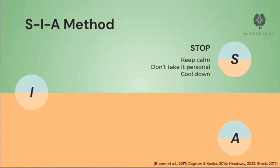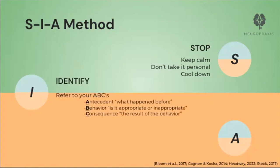Distract yourself with anything that will help you cool down like taking a short walk, taking deep breaths, stretching, or even watching a comedy. The I stands for Identify the triggers. This can be done by referring to your ABCs: A stands for antecedent — what happened before; B stands for behavior — is it appropriate or inappropriate; C stands for consequence — the result of the behavior. This is the best way to gather key information to prevent another occurrence. Assume there is an underlying reason behind the behavior — they may be having a hard time processing their needs into words, or the environment, physical symptoms, side effects, medications, or their current emotion can be leading to this behavior. Watch for obvious signs of pain such as clenching a body part, crying, or visual signs of confusion.